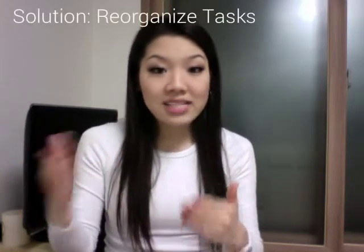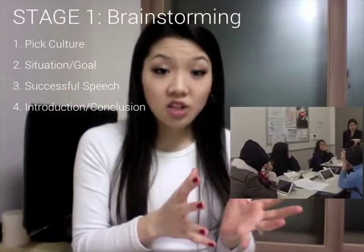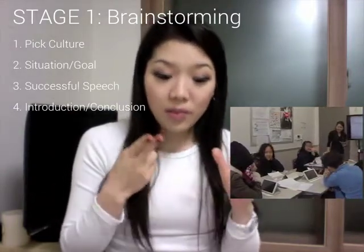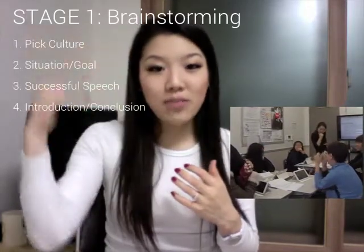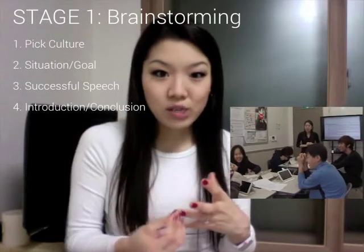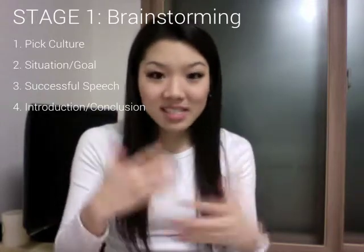The problems I ran into: it was hard for students to figure out which version of speech would be more successful without having first decided what type of culture they were presenting. So for the following classes, I switched it so that step one was deciding what culture they were going to film — was it going to be an Asian culture or a Western culture? From there, step two was picking a situation, so that already knowing the culture gave students more reason to pick a certain situation, since they had an idea of how they wanted to present the process of achieving that goal.